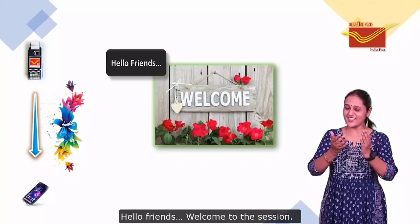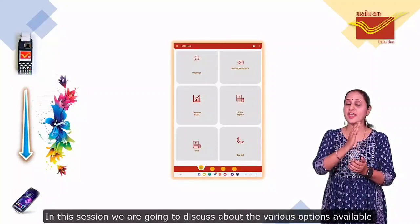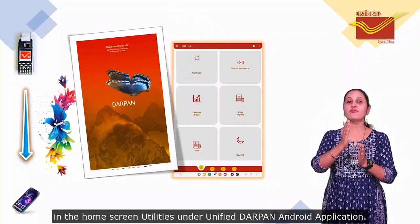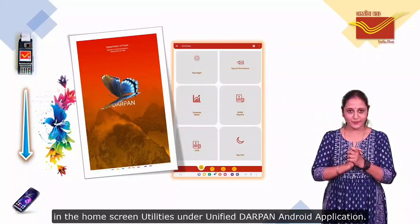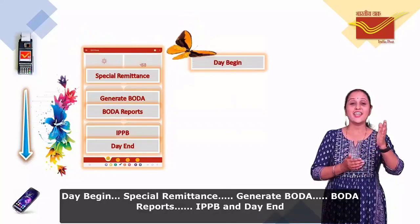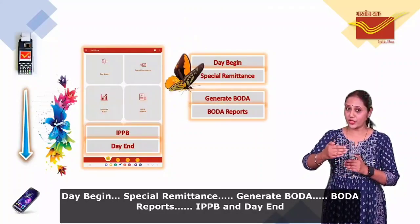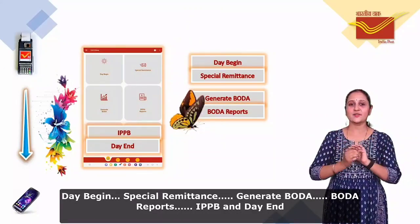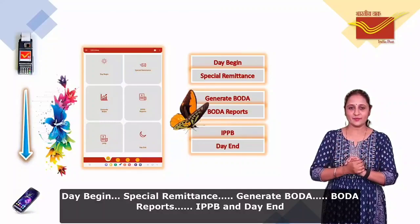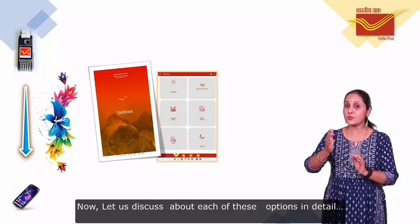Hello friends. Welcome to the session. In this session, we are going to discuss about the various options available in the home screen utilities under Unified DakPoint Android application. The various options available under Utilities are: Day Begin, Special Remittance, Generate Boda, Boda Reports, IPPB and Day End. Now, let us discuss about each of these options in detail.